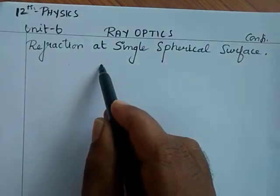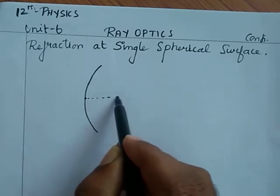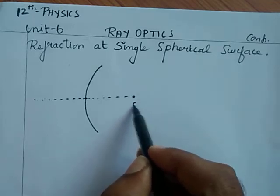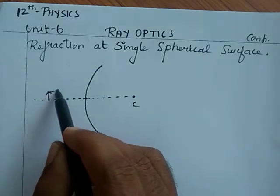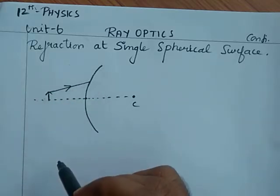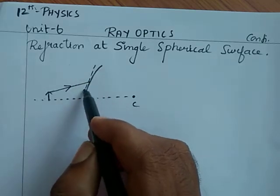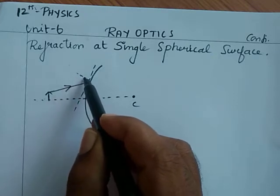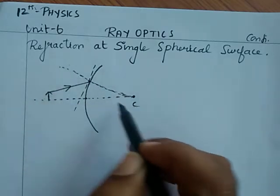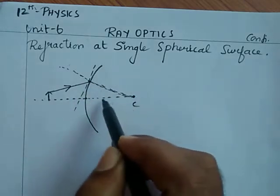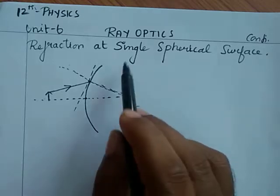First of all, I consider a spherical surface. Here this is the pole of the spherical surface. This is the principal axis. This is the center of curvature of the spherical surface. Suppose there is an object here, and light from the object falls on the spherical surface. At that point, we have to draw a normal. For this spherical surface, we need to first draw a tangent, then on that tangent, draw a line perpendicular to it — that is known as the normal.